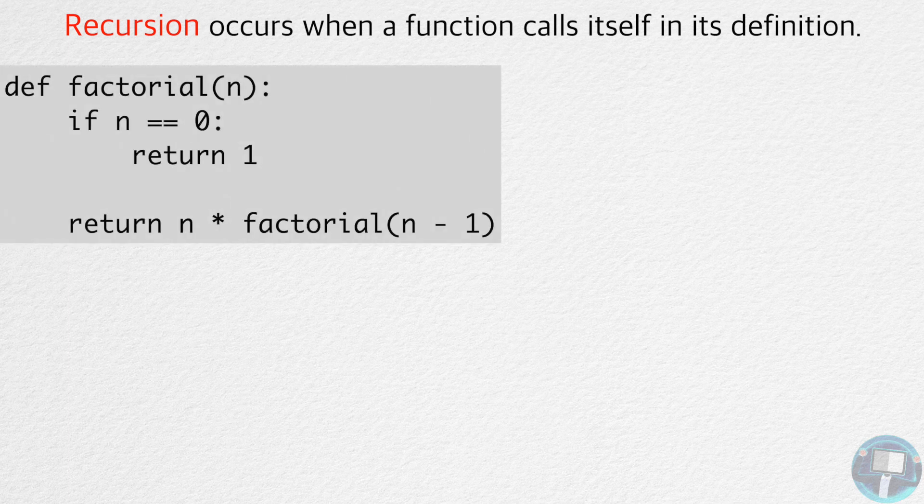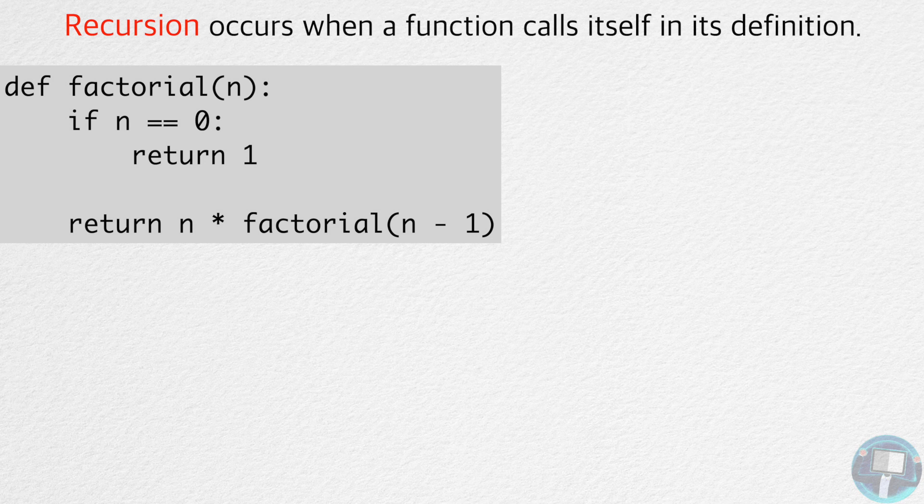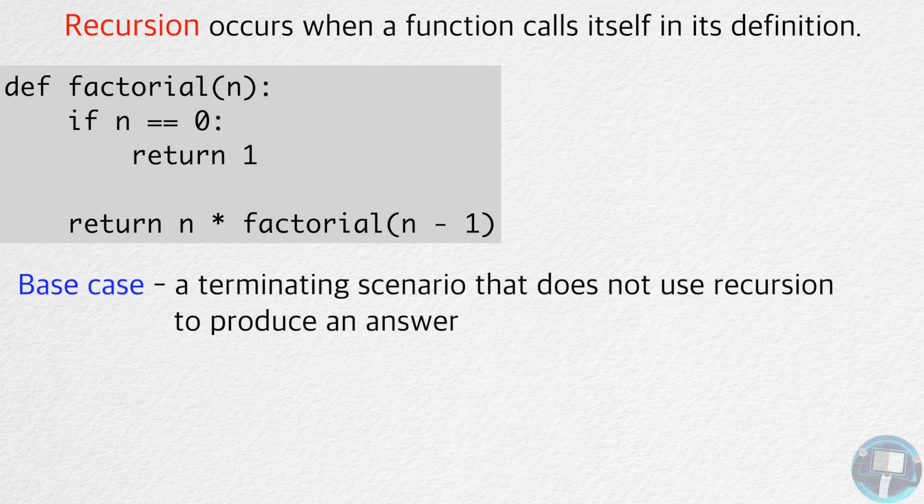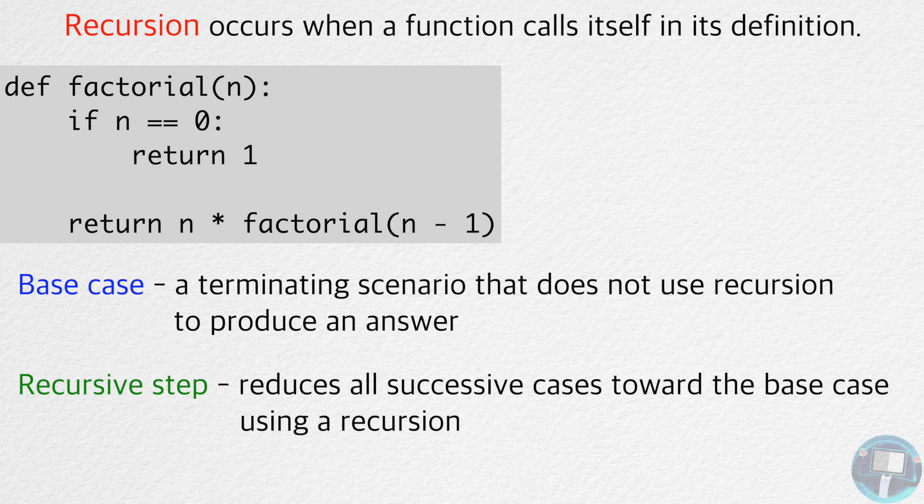Here is a recursive function for calculating the factorial of a number n. A recursive function is defined by two properties. A base case, which is a terminating scenario that does not use recursion to produce an answer. And a recursive step, which reduces all successive cases toward the base case using recursion.